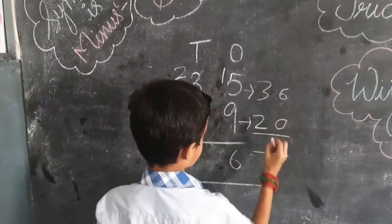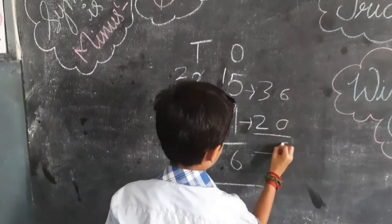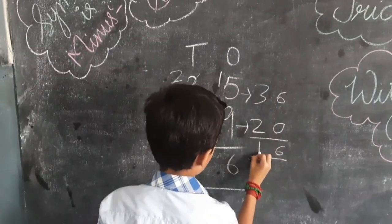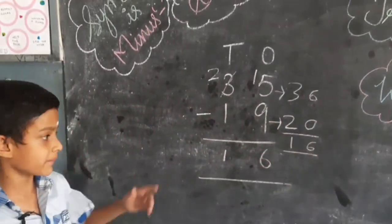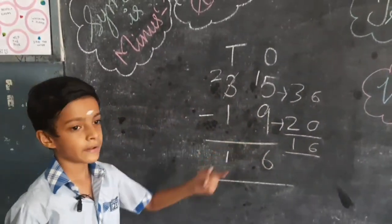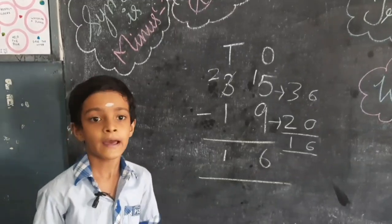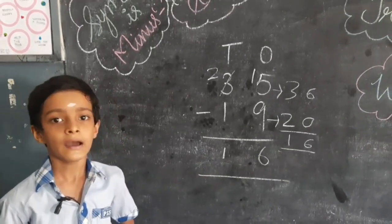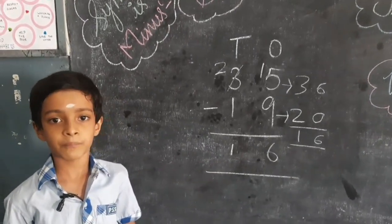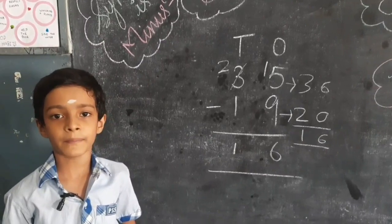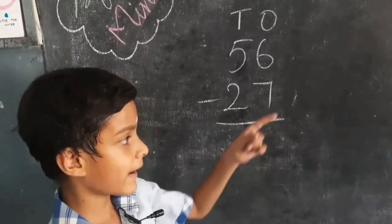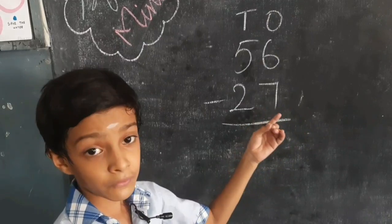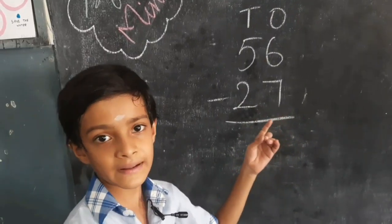Now subtract: 6 minus 0 is 6 and 3 minus 2 is 1. The difference is the same: 16. 35 minus 19 and 36 minus 20 give the exact same answer because both numbers increased by the same amount. We have done the sum without borrowing. Now let us see some more examples.